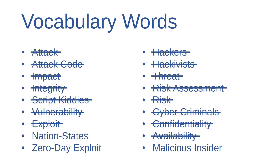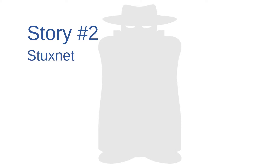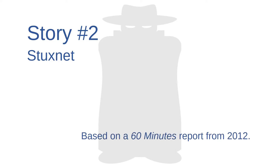I was able to use most of the vocabulary words from pages 6-11 of the textbook in that epic hacking story. The only terms I seem to have left out are nation-state, zero-day exploit, and malicious insider. I'll tell you another story to cover those three terms. The following story — about a cyberattack that was probably carried out by a nation-state — is based on a profile that ran on CBS's 60 Minutes in 2012.